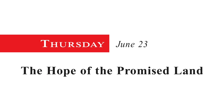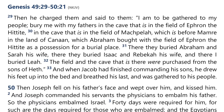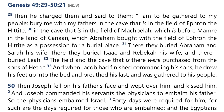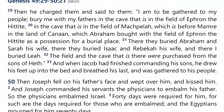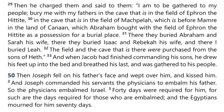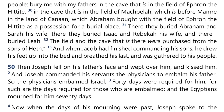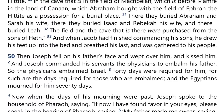Thursday, June 23: the hope of the promised land. Read Genesis 49, verse 29 through to chapter 50, verse 21. What great themes of hope are found in the conclusion of the book of Genesis? Genesis 49, beginning at verse 29. 'Then he charged them and said to them, I am to be gathered to my people. Bury me with my fathers in the cave that is in the field of Ephron the Hittite, in the cave that is in the field of Machpelah, which is before Mamre in the land of Canaan, which Abraham bought with the field of Ephron the Hittite, as a possession for a burial place. There they buried Abraham and Sarah his wife. There they buried Isaac and Rebekah his wife. And there I buried Leah. The field and the cave that is there were purchased from the sons of Heth.' And when Jacob had finished commanding his sons, he drew his feet up into the bed and breathed his last and was gathered to his people.